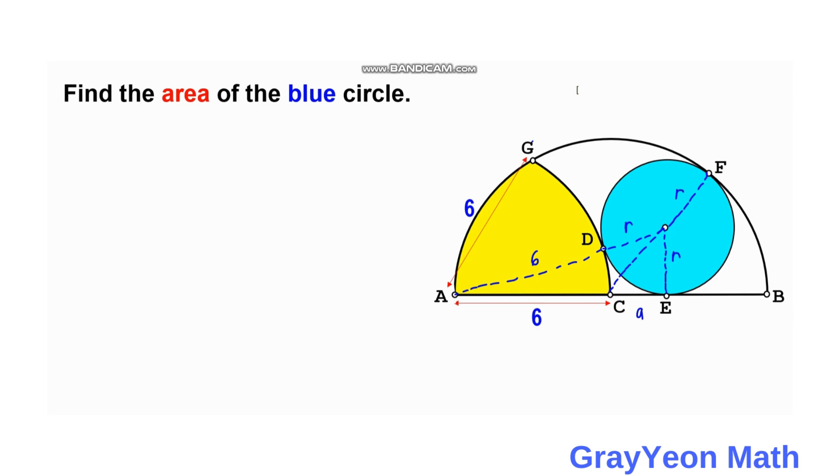We know that the radius is 6, so this will be 6 minus R. So let's call this center as H.